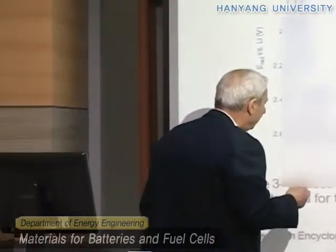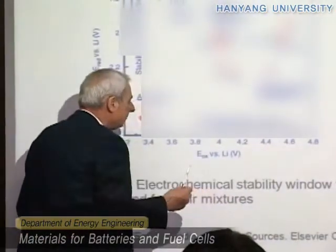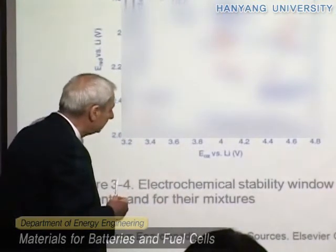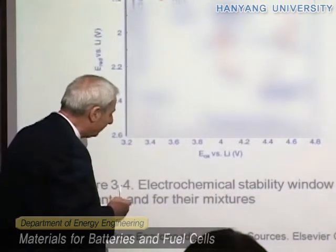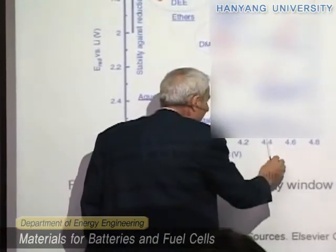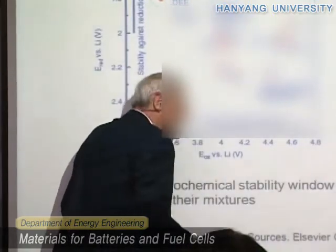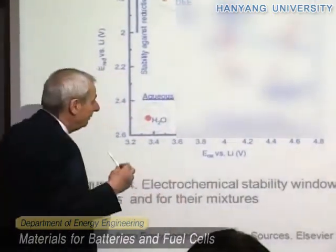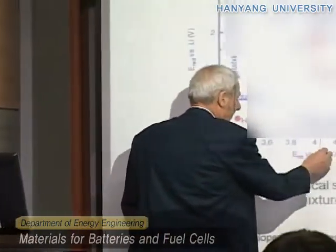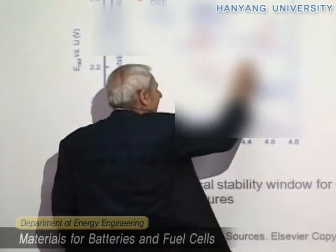If you look here, we have the stability against oxidation — that means the decomposition values versus lithium. If you are in this area you are pretty good, because you have stability going to 4.4 to 4.8 volts versus lithium. The average voltage of a lithium-ion battery is 4 volts, so we are in range. If you use cyclic or mixed carbonate, you are okay, and this is the reason why we select this one.